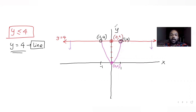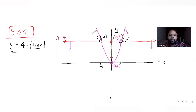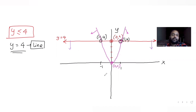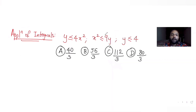Since y ≤ 4x², the region is below or on the parabola. The common region so far is below y = 4 and below y = 4x², which extends into the third and fourth quadrants as well. Now let's also plot the third curve to identify the common enclosed region.